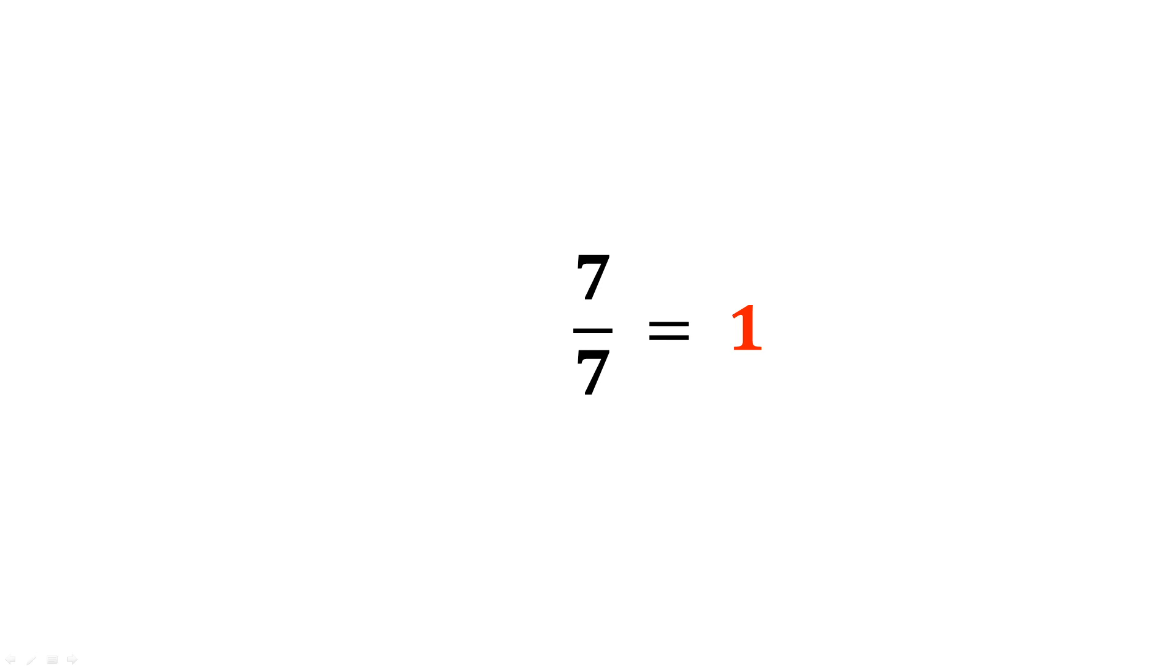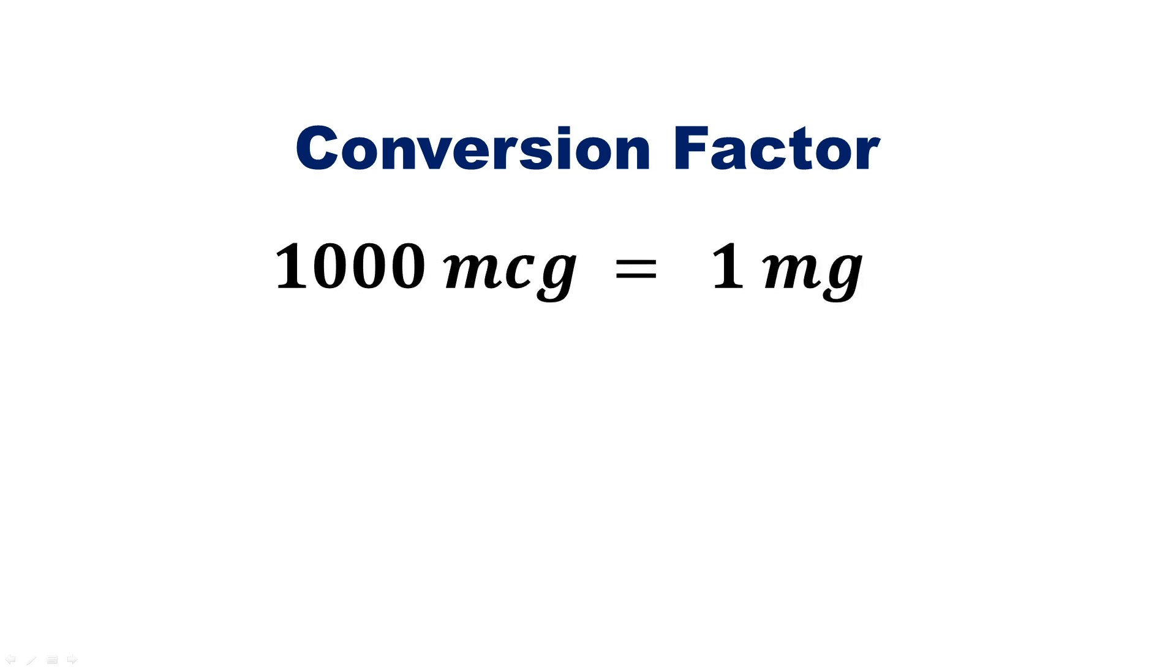So step one of this method is to understand that anytime you see a fraction that is equivalent to one thing or one unit, that fraction is going to be considered what we call a conversion factor. And you're then going to take these conversion factors and plug them into your math equation. So the easiest conversion factors to identify are those that are equivalencies. Say for example I'm converting micrograms to milligrams. We know that 1,000 micrograms is equal to 1 milligram and we can write that as a fraction. This now becomes a conversion factor.